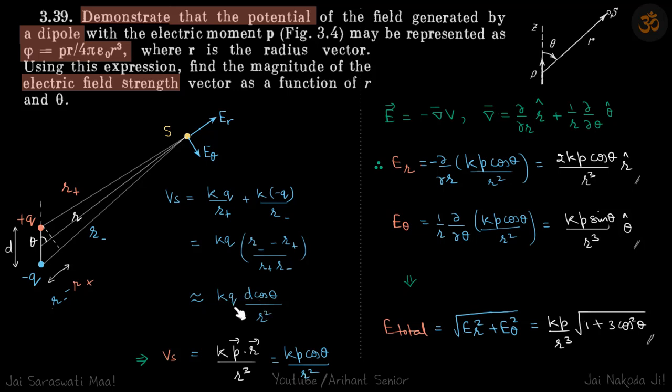This is qd which is the dipole moment, and cos θ which is the angle between p and r, so we can write this qd cos θ as p·r/r. This becomes k(p·r)/r³.